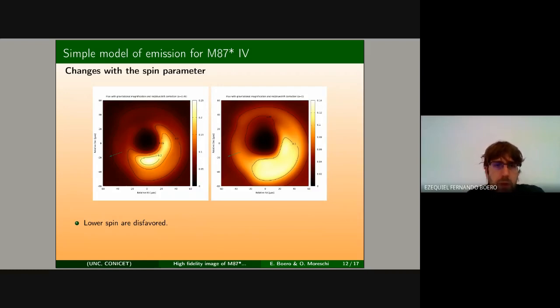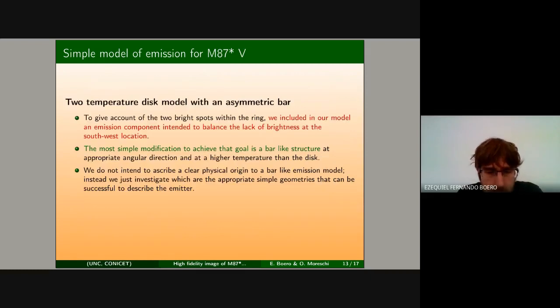In order to improve our model and give account of the two bright spots that are present in the images, we include in our model an emission component intended to balance the lack of brightness at the east location. Perhaps the most simple modification that one can think of is to put a bar-like structure at the appropriate angular direction having a brighter temperature than the disk. Of course, for our immediate goal we are not intending to ascribe a clear physical origin to that bar. Instead we are just investigating what are the simplest geometries that one can have to successfully reproduce the emission observed.